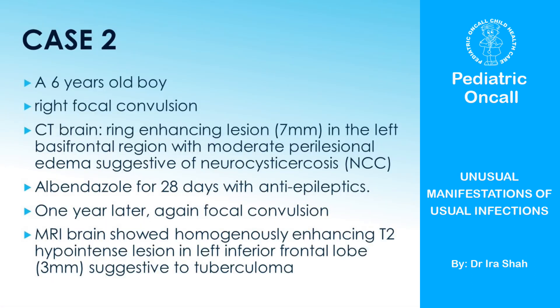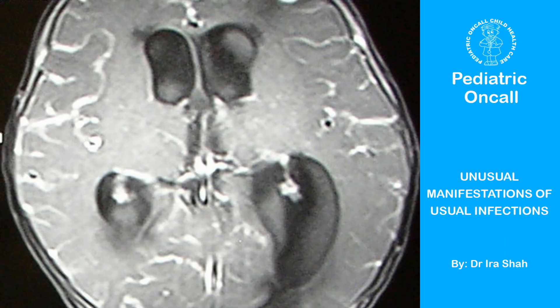Here is another common scenario. A six-year-old boy presented with right focal convulsions. A CT scan showed a 7-millimeter lesion in the left frontal lobe suggestive of NCC. He was given albendazole for 28 days with anti-epileptics. A follow-up scan was not done. One year later he again had a focal convulsion, and this time an MRI brain showed a tuberculoma — the same lesion, now reported as a tuberculoma.